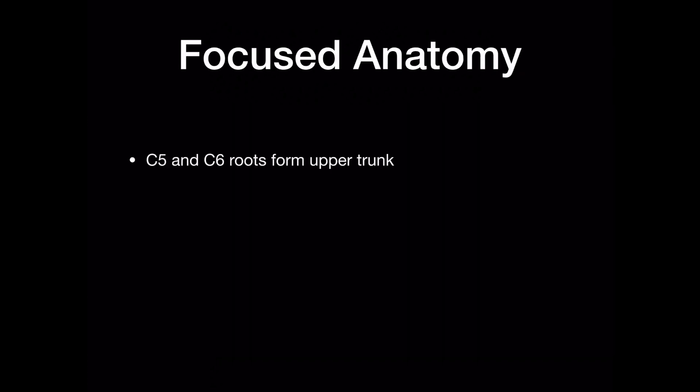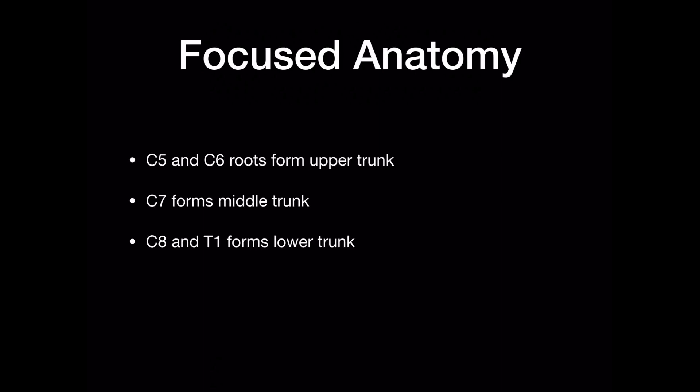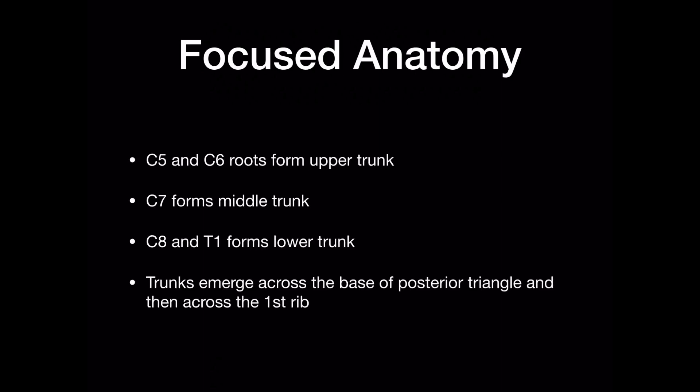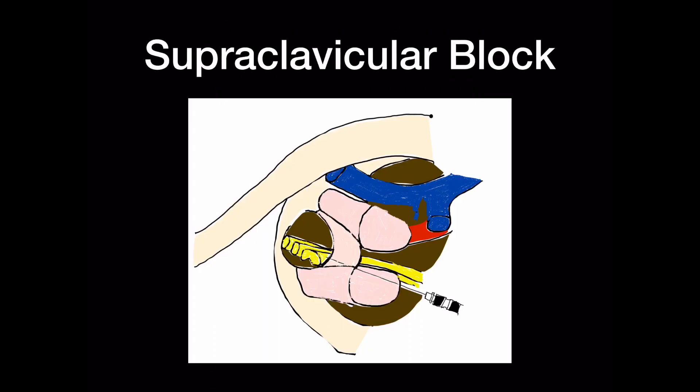The C5 and C6 roots go on to form the upper trunk. The C7 root forms the middle trunk and the C8 and T1 roots form the lower trunk. The trunks emerge across the base of the posterior triangle and then across the first rib. The most common type of block used by the anaesthetist to target the trunks is the supraclavicular block.